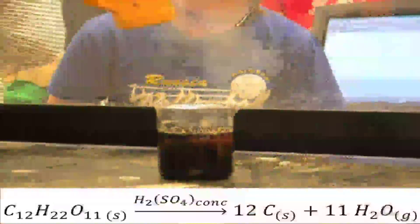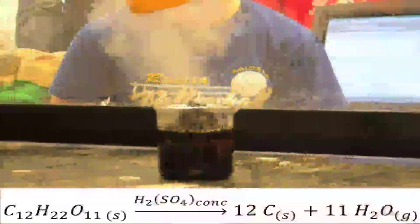So we can see there's more than just a color change now. The sulfuric acid is dehydrating the sugar and turning it into a mass of solid carbon that you see rising up out of the beaker, and water vapor, which you see as steam, coming off the mass of carbon.